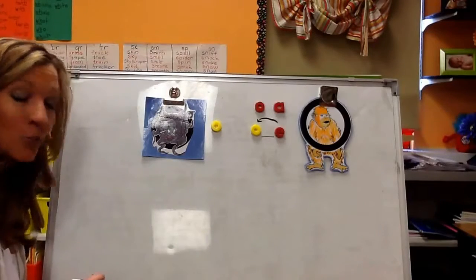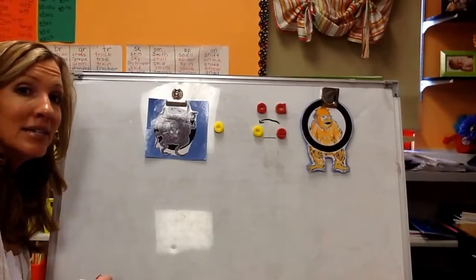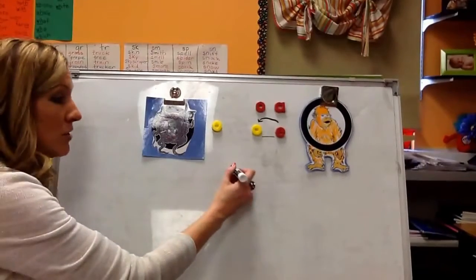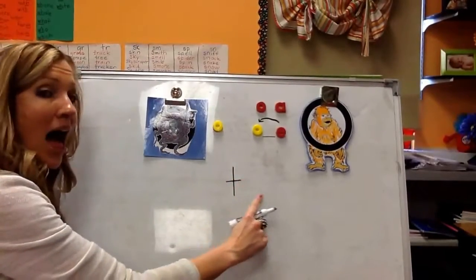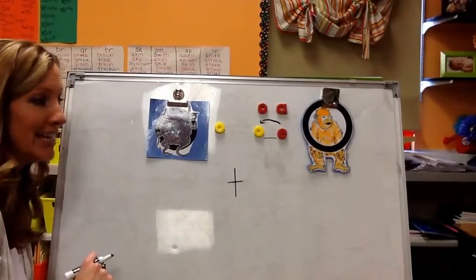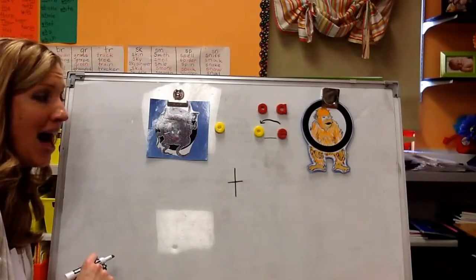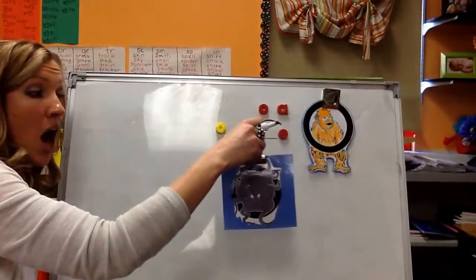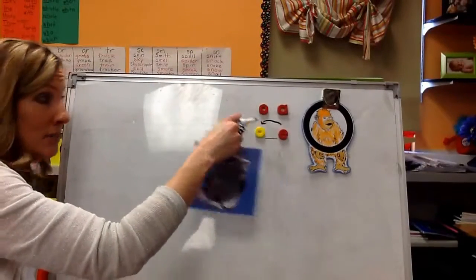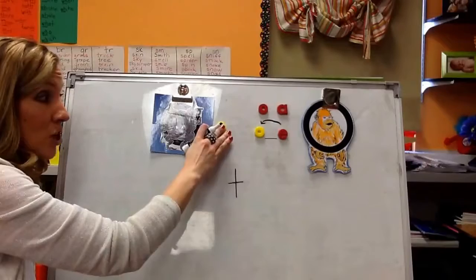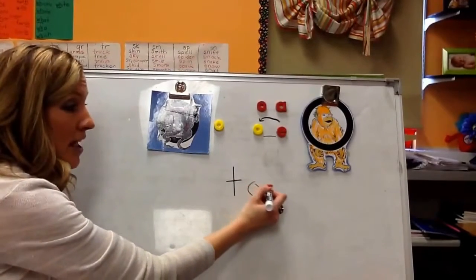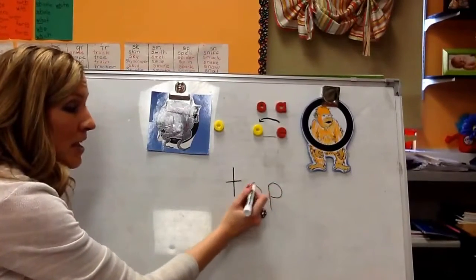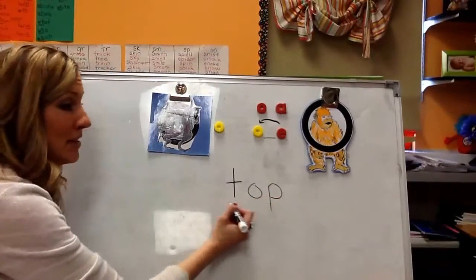Now I'm going to write the word top. So I'm going to go T-ah. I'm going to say it slowly and I hear ollie octopus. So that means that I have to do ollie octopus. So that's short O. That's O by itself. And then the P. T-ah-p-top.